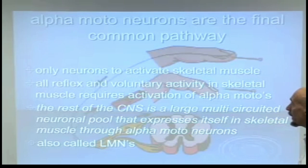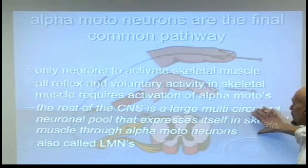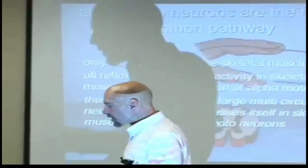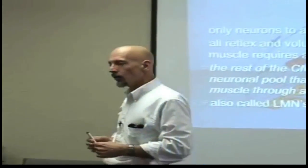All reflex and voluntary activity in skeletal muscle requires activation of alpha motor neurons. The rest of the CNS is essentially a multi-circuited neuronal pool that you get to play with daily. That's why it's so exciting to be a chiropractor — what you're doing is influencing interneurons all day, not just muscles directly, but the input into the neuronal pool in the central nervous system.